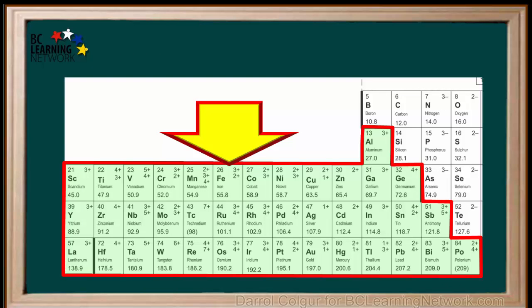Many of the cations in the middle section of the periodic table, as shown here, will undergo acid hydrolysis when added to water, producing hydronium ions. But in chemistry 12, we will not consider all of them.